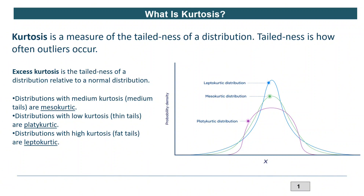So this is how the word kurtosis, from the Greek word 'kurtic' meaning curve, gives us three types of distributions: leptokurtic (narrow), mesokurtic (in between), and platokurtic (flat). Lepto is narrow, plateau is flat, and meso is in between. This is the basic understanding of kurtosis.